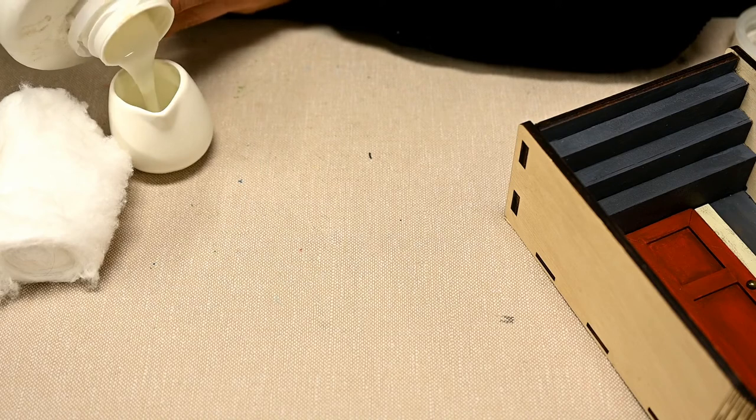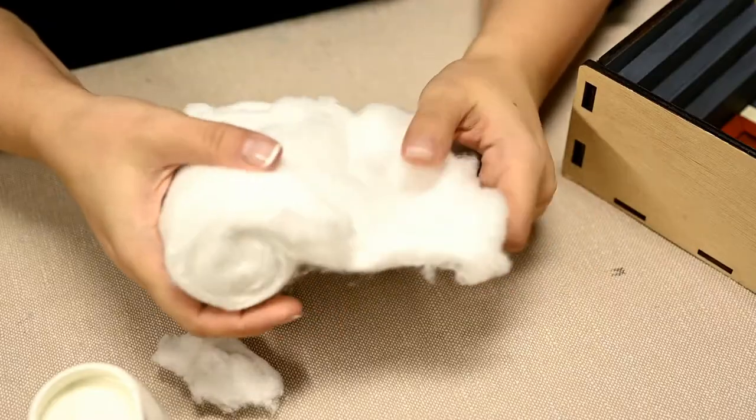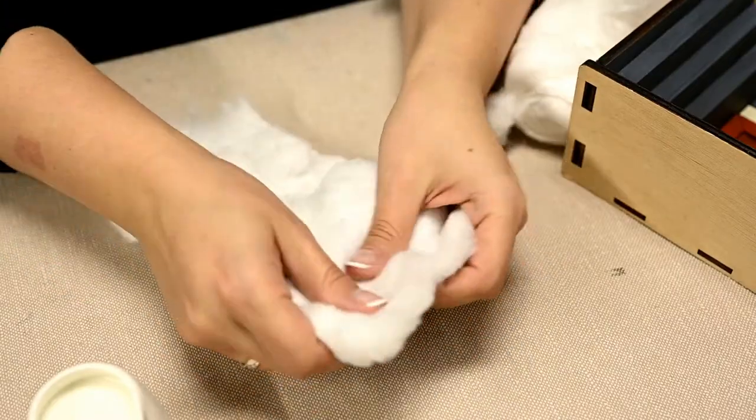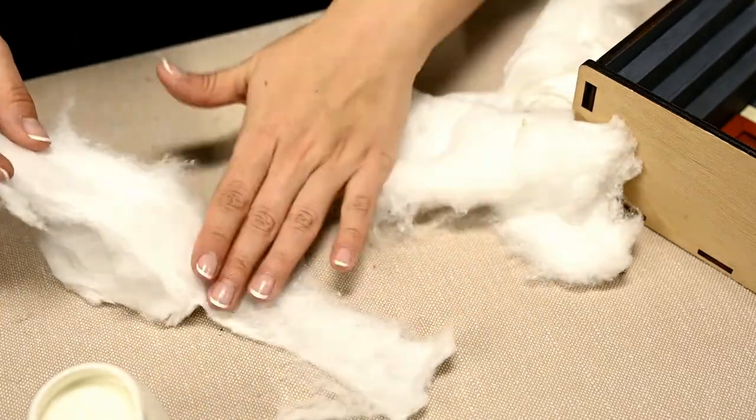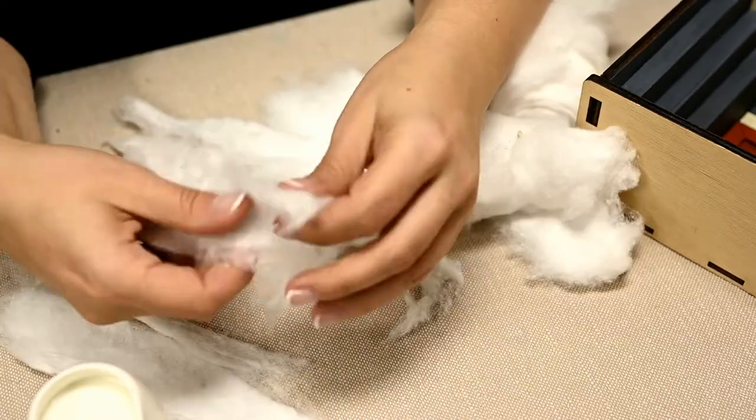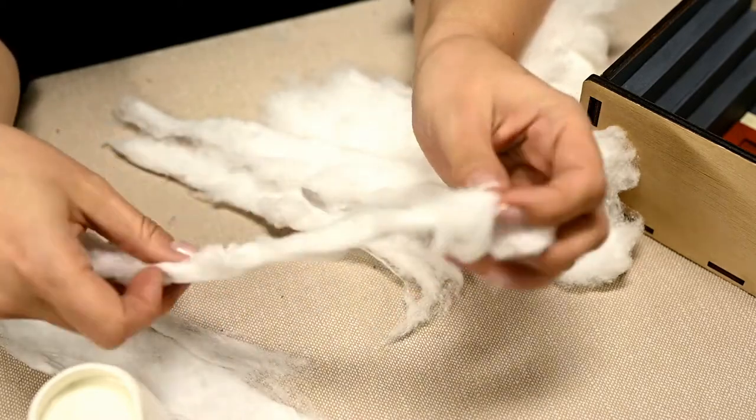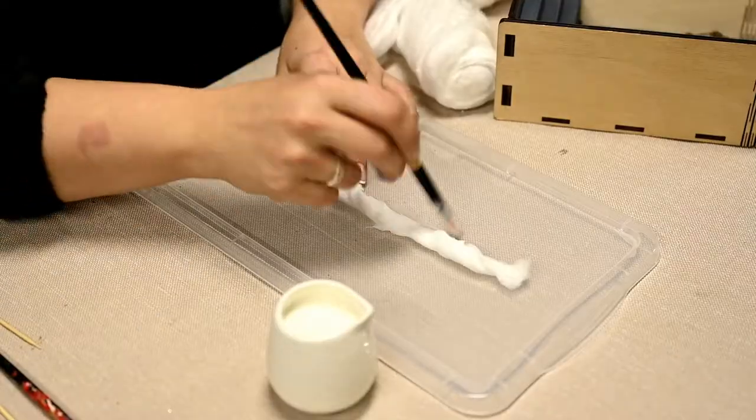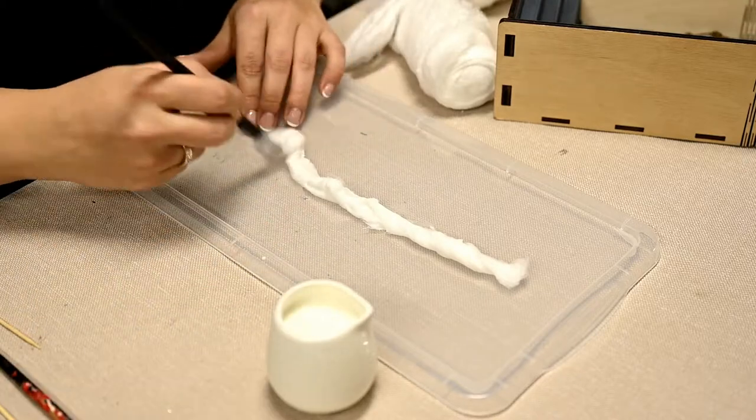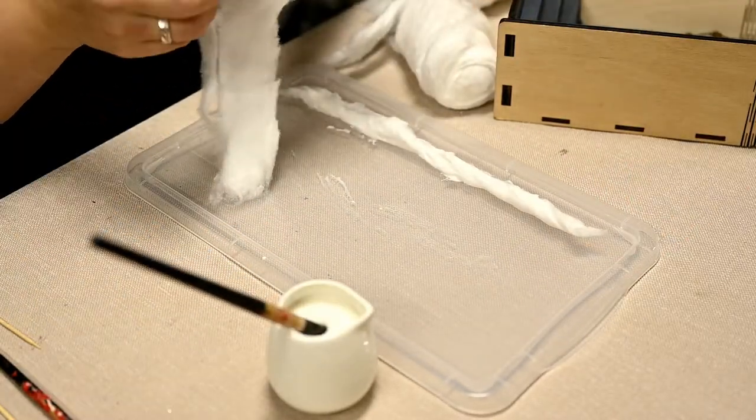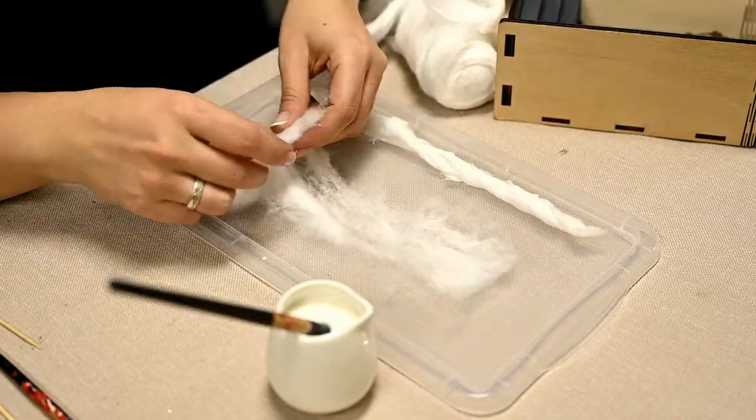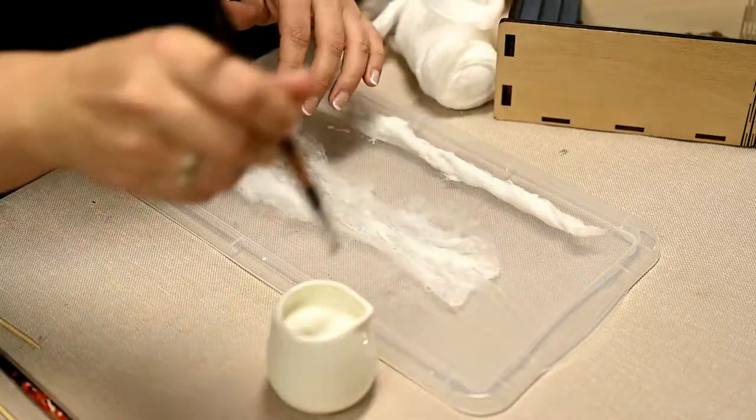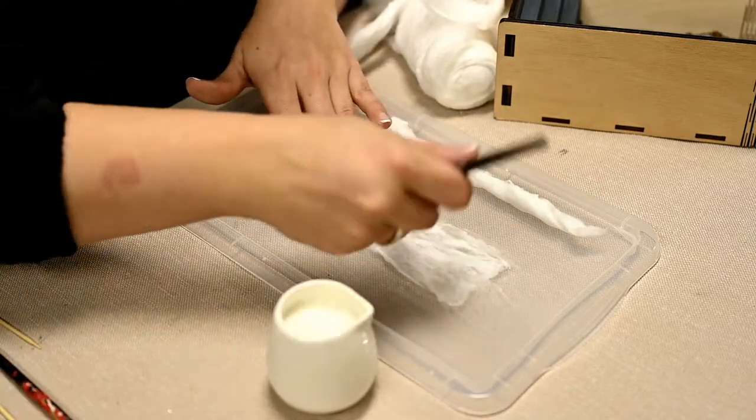I decided to use cotton roll for making entryway decorations. I'm taking a thin long piece of cotton and twisting it into a long thin roll. This one is for a garland over the door. I'm covering it with white glue. Best is to use some flat plastic surface for working. And then I'm taking a very thin layer of cotton and covering it with white glue so that cotton was soaked in it.